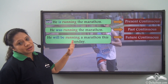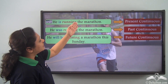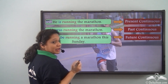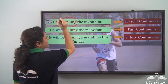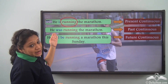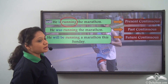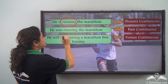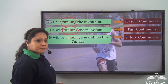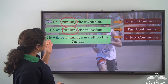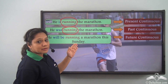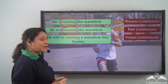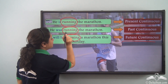Consider: 'He is running the marathon' — present continuous tense, using the present participle 'running.' 'He was running the marathon' — past continuous tense, still using the present participle 'running.' 'He will be running a marathon this Sunday' — future continuous tense, again using the present participle 'running.' So the same present participle is used across all three continuous tenses.